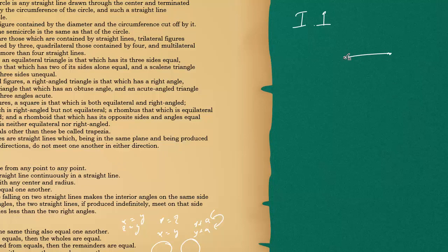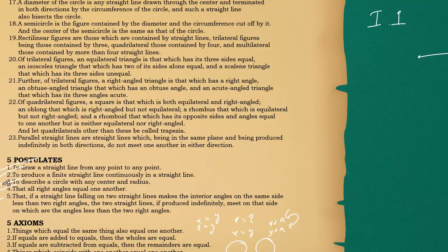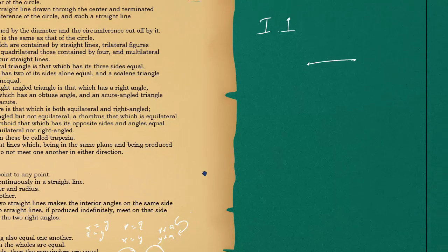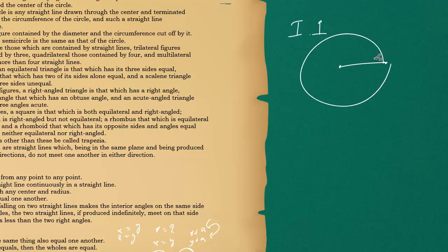Now, you draw a circle. How do you draw a circle? It has been mentioned in the postulates — you have a center and you can just draw it. It's mentioned here: to describe a circle with any center and radius. If you know the center and radius, you can draw it. You know how to draw this circle from Postulate 3.